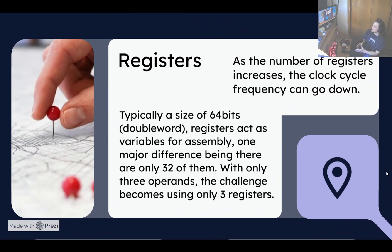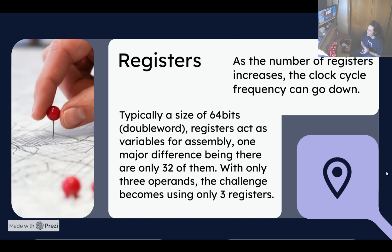Registers are typically a size of 64 bits, called double word, on all x64 computers. If you're using a 32-bit computer, then it's going to be 32 bits. Registers act as variables for assembly. One major difference between variables in a programming language and variables in assembly is that there are only 32 of them, with the last one always being equal to zero.